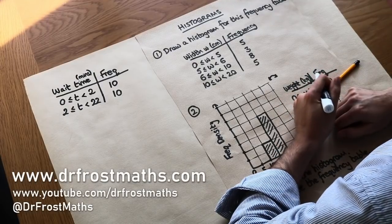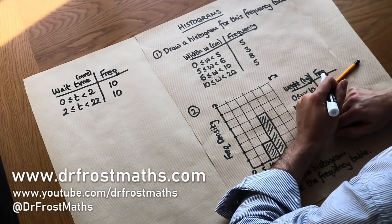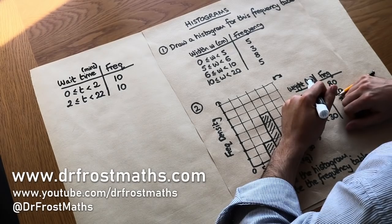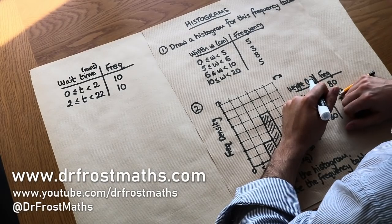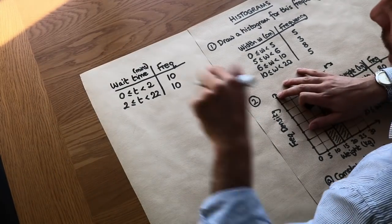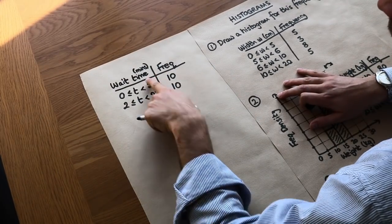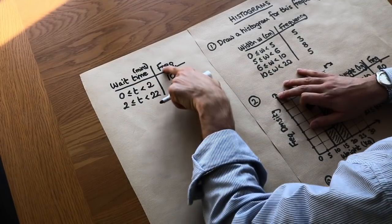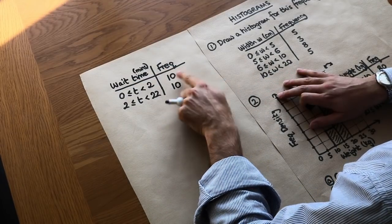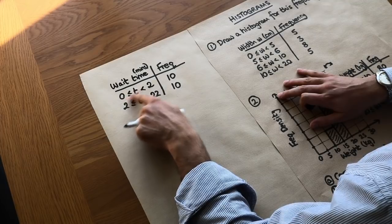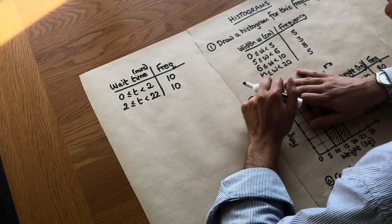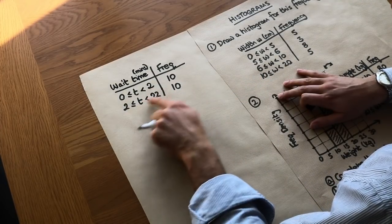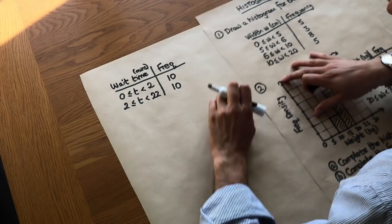Hello and welcome to this Dr Frost's maths video on histograms. To understand the purpose of histograms and why we'd want to draw one, let's look at this example. Let's say we had different waiting times in a queue and we've got the frequency here — 10 people waited between 0 and 2 minutes, and 10 people waited between 2 and 22 minutes.